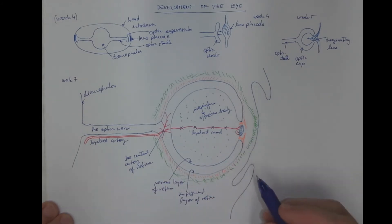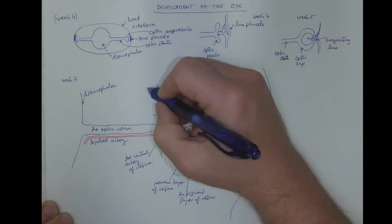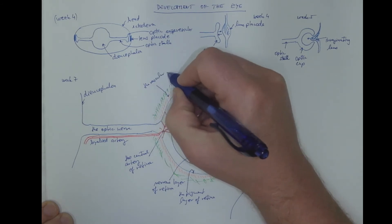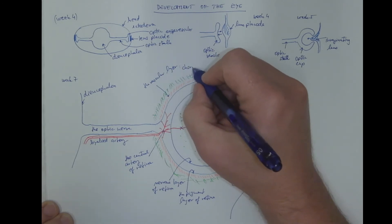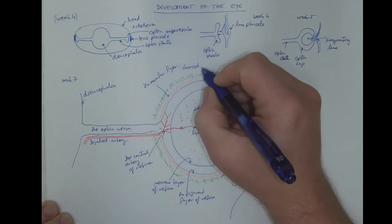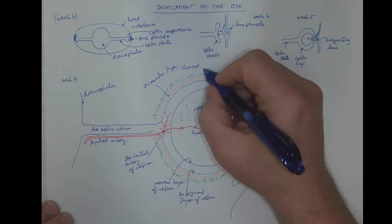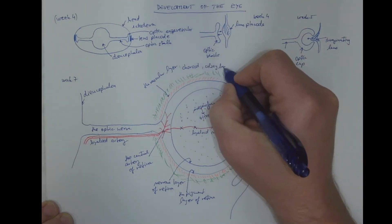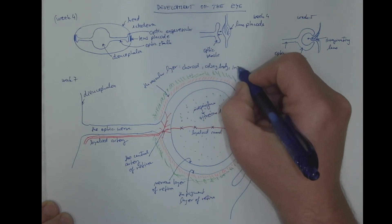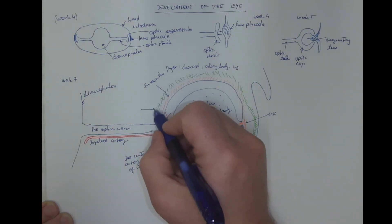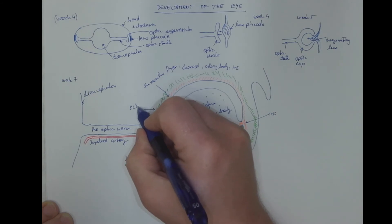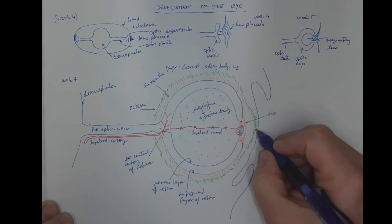We have the vascular layer: the choroid, the ciliary body, and the iris. And the outer fibrous tunica, which is the sclera, and here the cornea.